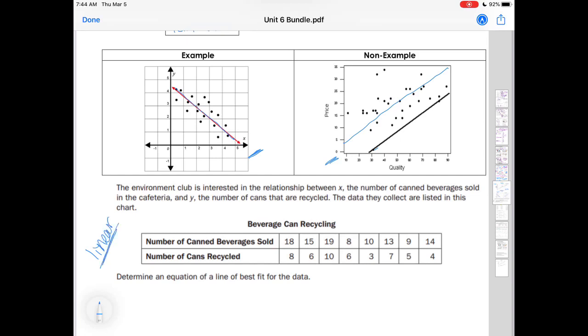Here I have the environmental club is interested in a relationship between X, the number of canned beverages sold in the cafeteria, and Y, the number of cans that are recycled. The data collected are listed in this chart. Determine an equation of line of best fit of data.